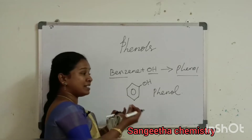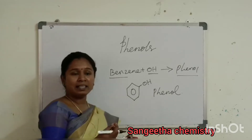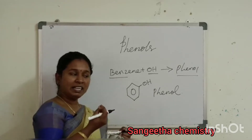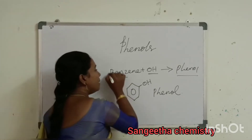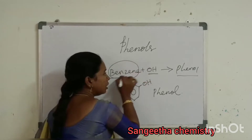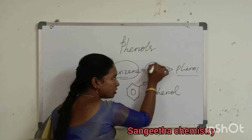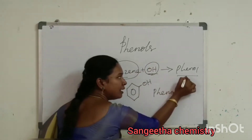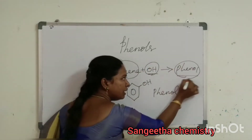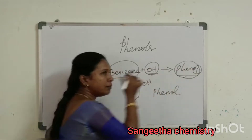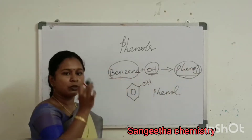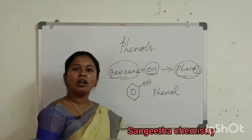Phenol structure is very simple. Benzene — that is also a hydroxyl group. It is called phenol. It is called an alcohol group.